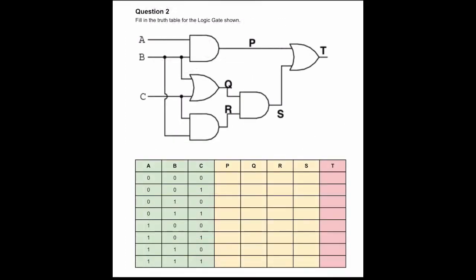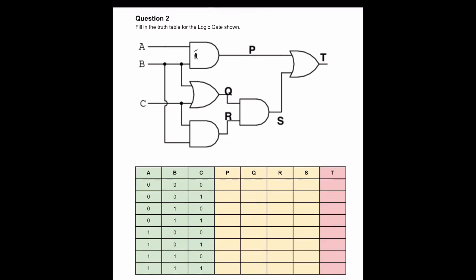Question two is quite complicated, so we've broken it down into different stages. We have three inputs A, B and C, and we've added intermediate stages P, Q, R and S, with final output T. We'll start by looking at the part we call P. P is the product of the AND gate at the top, which is concerned with inputs A and B only.